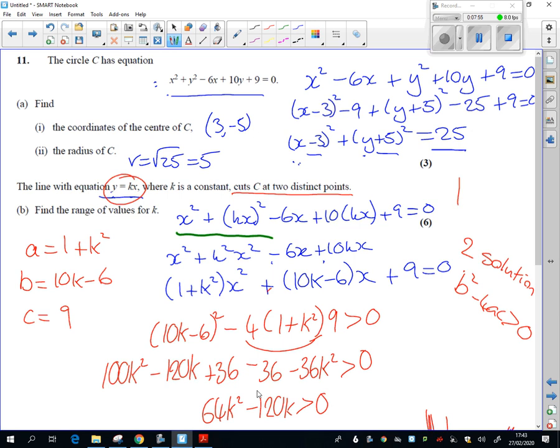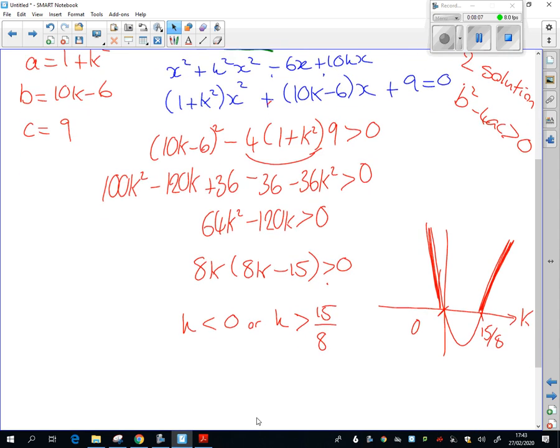Because if k equals 0, we just wouldn't have a line. Now, if you get the full correct solution, that's a bit irrelevant, because k equals 0 isn't included in our answer anyway. But if you didn't have the fully correct solution, there was a B1 mark available for that.